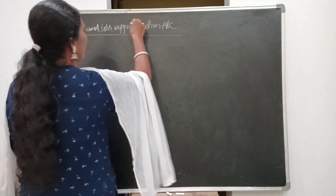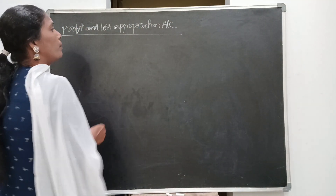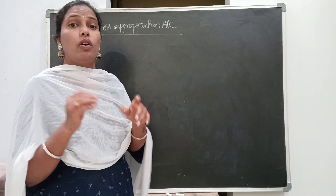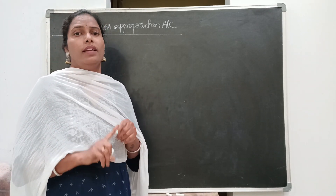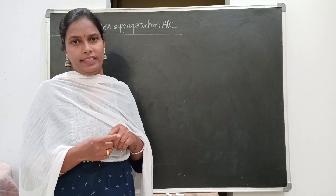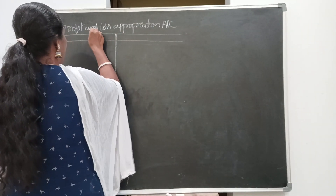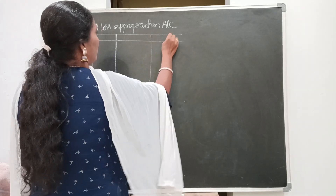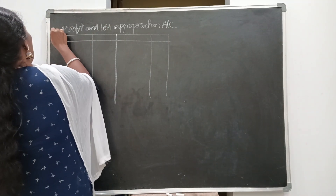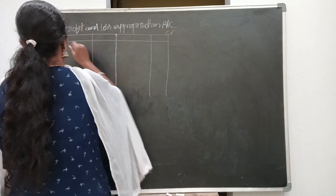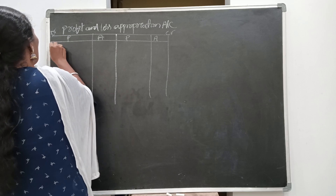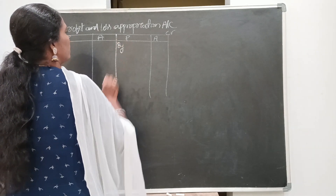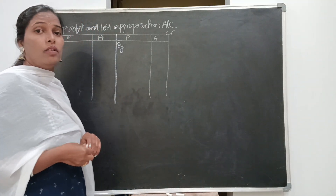Profit and loss appropriation means distribution. Profit and loss appropriation account is nothing but a nominal account. You know the rules of accounts — personal, real, nominal. In nominal account, debit all expenses and losses, credit all incomes and gains. So first, draw the format: particulars and amount on both debit and credit sides. This is the debit side and the buy side.